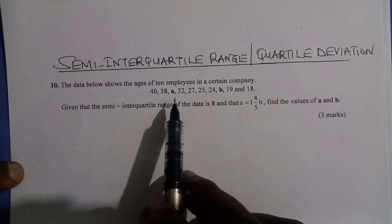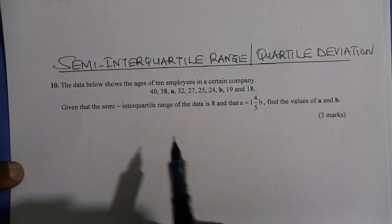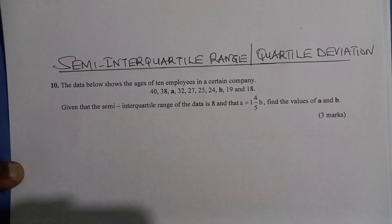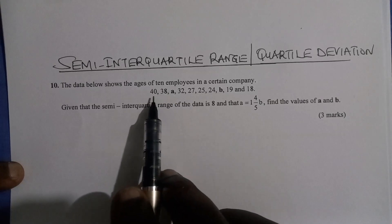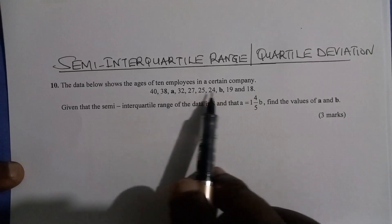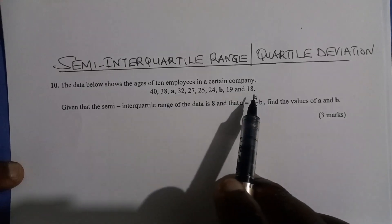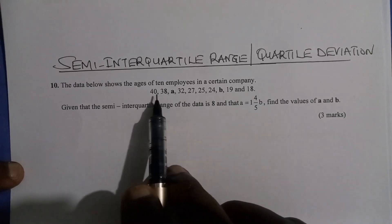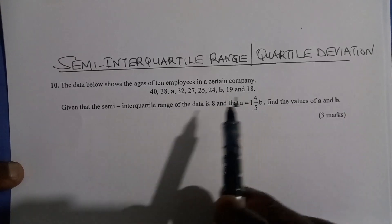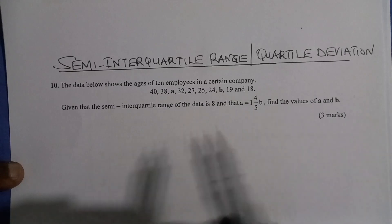To solve this question, you need to understand how to calculate interquartile range for ungrouped data. The first thing you should do is arrange the data either in ascending or descending order. When I look at this data, it is already arranged from the largest to the smallest. You can see that 40, 38, so it is in the right order.